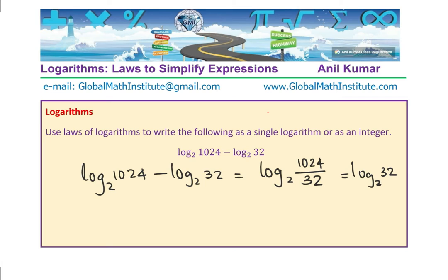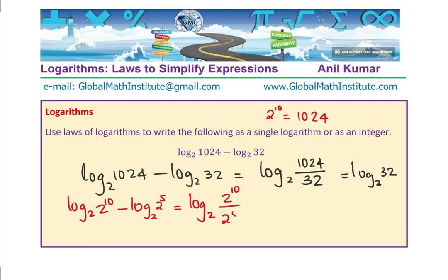2 to the power of 10 is 1024 — a very important number to remember. So I could write this as log base 2 of 2 to the power of 10, and 32 is 2 to the power of 5. This gives log base 2 of (2¹⁰ / 2⁵) = log base 2 of 2 to the power of 10 minus 5, which equals 5. When you get numbers in logarithms, try to write them as powers of the base.